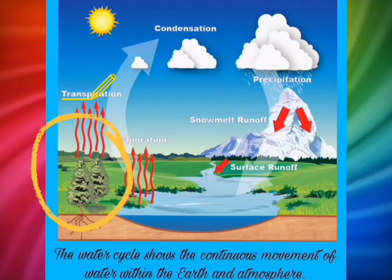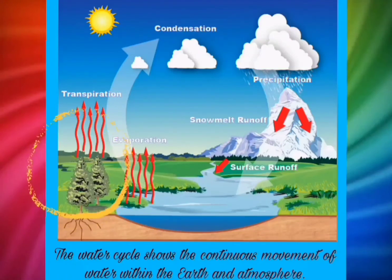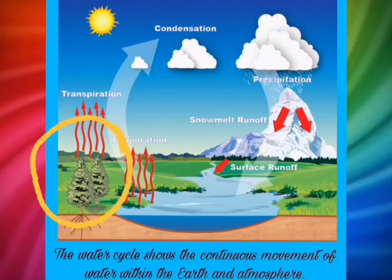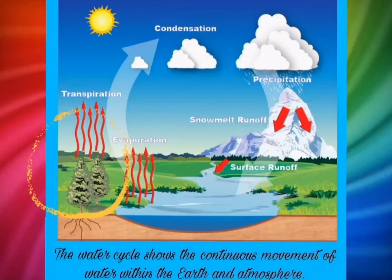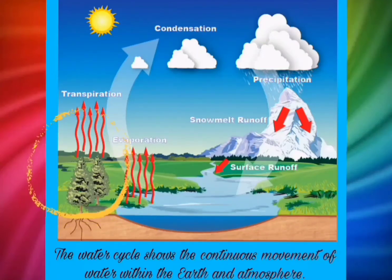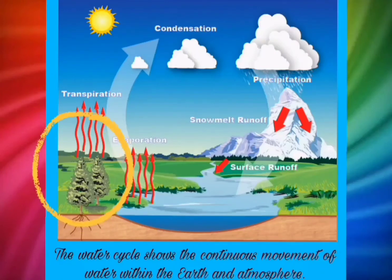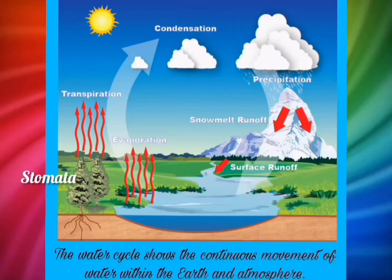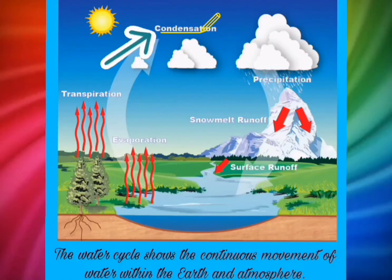Transpiration is the evaporation of water from plants through pores on the underside of leaves that are connected to vascular plant tissues, which are called stomata. Next is the condensation process.